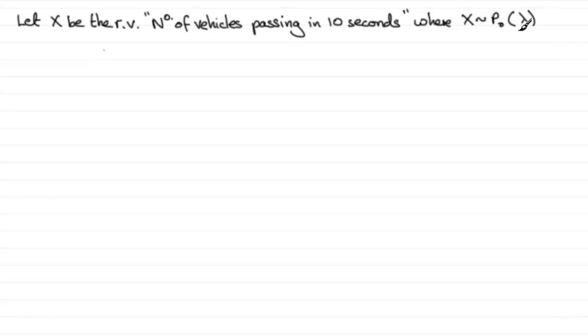First of all, what is lambda going to be? Well, if we're looking at a 10 second interval, we're told earlier in the question that 36 vehicles pass per minute. So in 10 seconds that's going to be one sixth of a minute, so that would be one sixth of 36 vehicles, which is 6 vehicles.